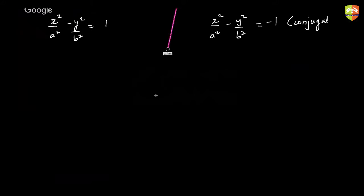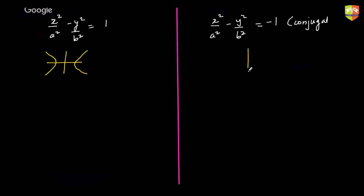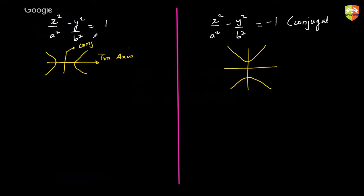Here's a quick comparison chart between the two forms. Graphically, one opens horizontally and the other vertically. For the standard form, the x-axis contains the transverse axis and the other is the conjugate axis. For the conjugate form, the y-axis becomes the transverse axis.